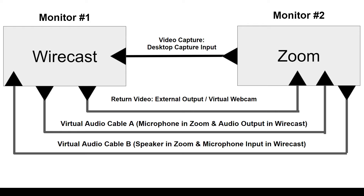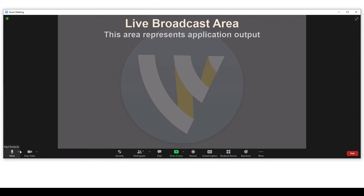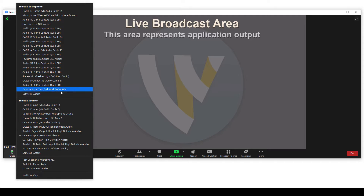The process I'm going to show you requires two monitors — Wirecast on one monitor for your video production, streaming, and recording, and then Zoom on the other monitor. To capture the video from Zoom we just do a desktop capture, that's the easy part. There's also a virtual webcam that sends anything in Wirecast to Zoom — also easy. The part that trips people up is the audio, and that's going to require two virtual audio cables using the microphone and speaker outputs of Zoom.